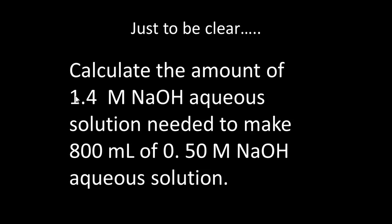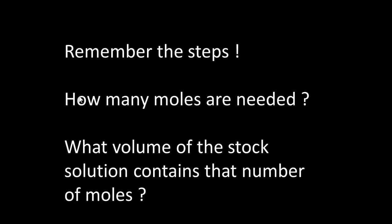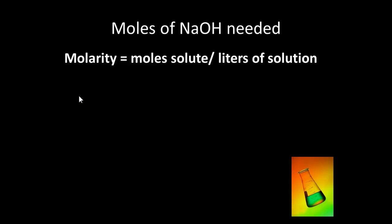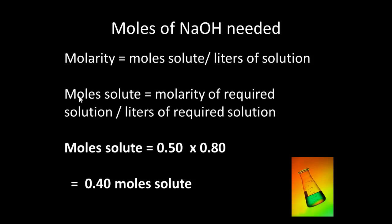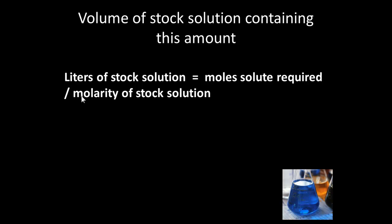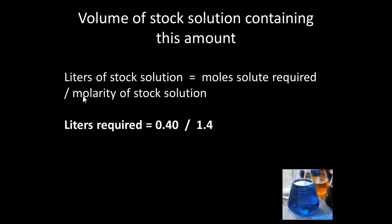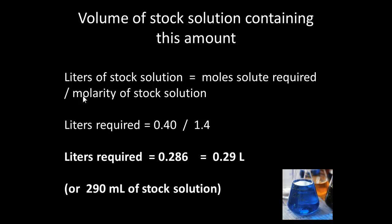Let's calculate the amount of 1.4 molar solution needed to make 800 mL of 0.5 molar solution. Moles of solute equals 0.5 times 0.8, which is 0.4 moles. Then liters of stock solution equals moles divided by molarity of stock: 0.40 divided by 1.4 gives 0.286, approximately 0.29 liters — so 290 mL of stock solution is required.